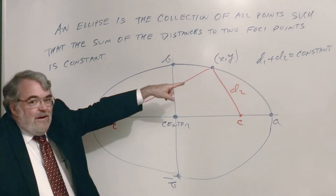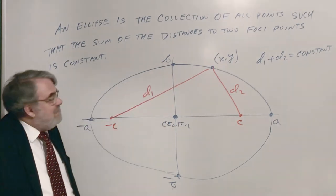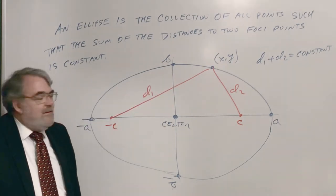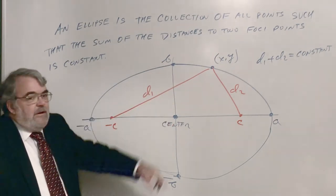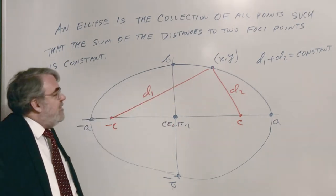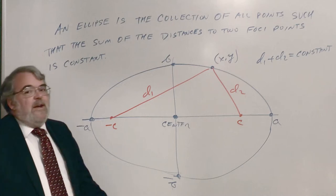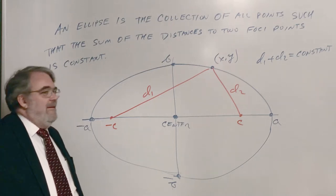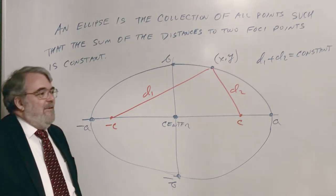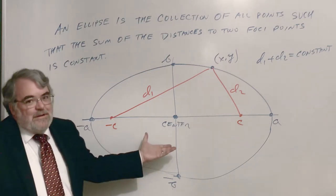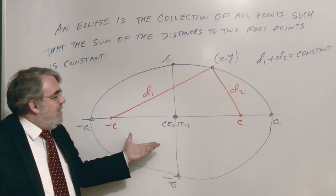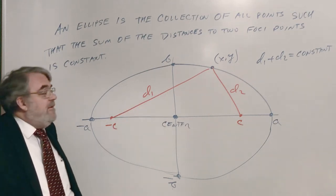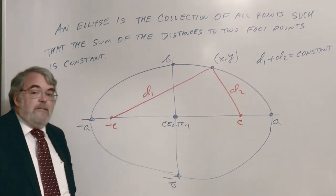My first question is: what is that constant? We can figure this out. D1 plus D2 — what is that number? We don't have any numbers on this graph, but we have letters. What is the length of that constant?